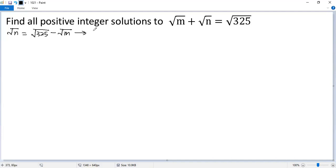Square both sides, so we get n equals that square equals 325, that square equals m, and then we need to minus 2ab. Minus 2 times 325 times m.